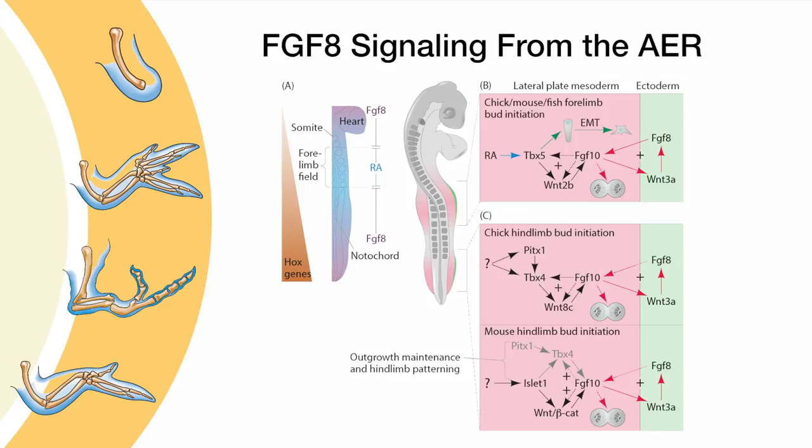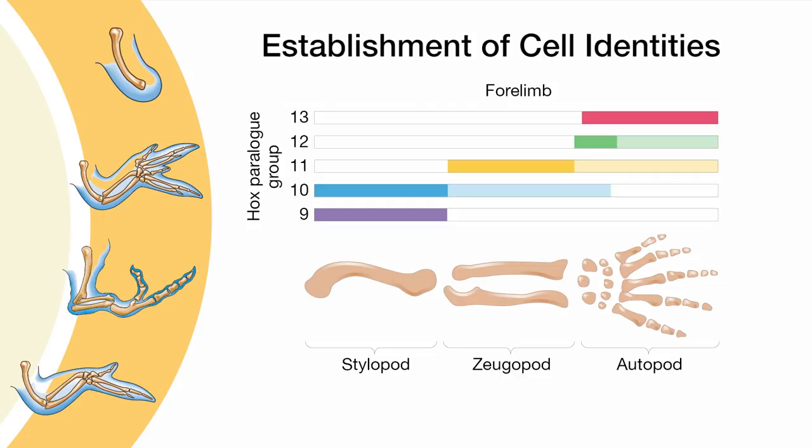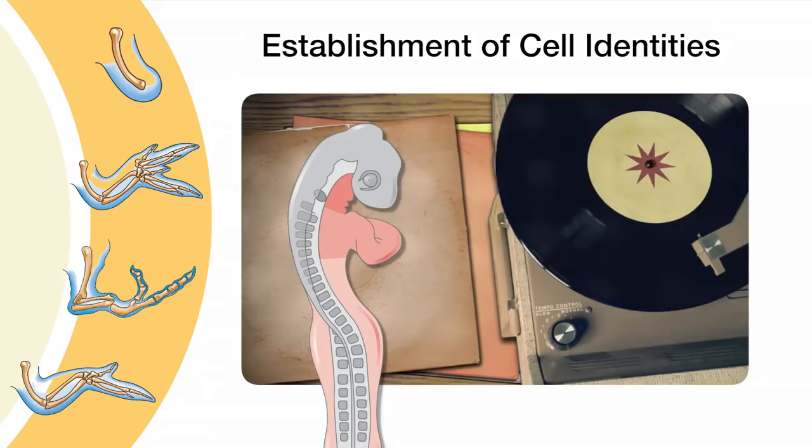Now we have made a limb bud and placed it in the correct position along the body. We still need to determine how the correct cell identities are established along the different axes of the limb. How is that sequential pattern of Hox gene expression orchestrated along these axes to build the correct elements? One important principle about developmental biology is that it's kind of like a broken record but broken in the right way — the embryo steals mechanisms that worked before and repeats it in an organ-specific way.